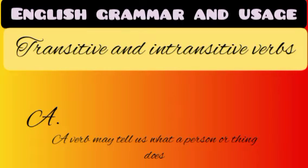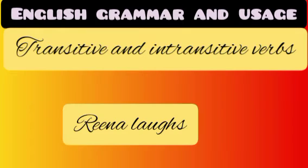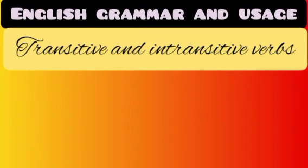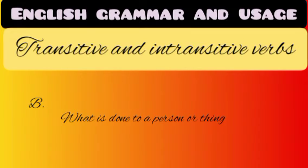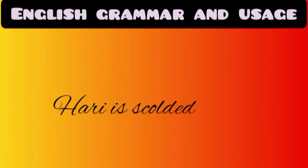A verb may tell us: (A) what a person or thing does — for example, 'Rena loves.' What does Rena do? She loves. (B) What is done to a person or thing — for example, 'Harry is scalded.' The verb here is 'scalded,' expressing what is done to a person or thing.